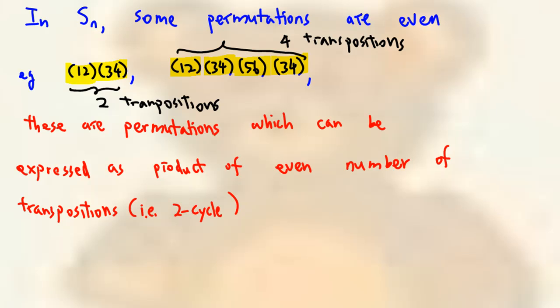In S sub n, some permutations are even. For example, (1 2)(3 4) and (1 2)(3 4)(5 6)(3 4) are even permutations. These are permutations which can be expressed as product of even number of transposition, that is 2-cycle.